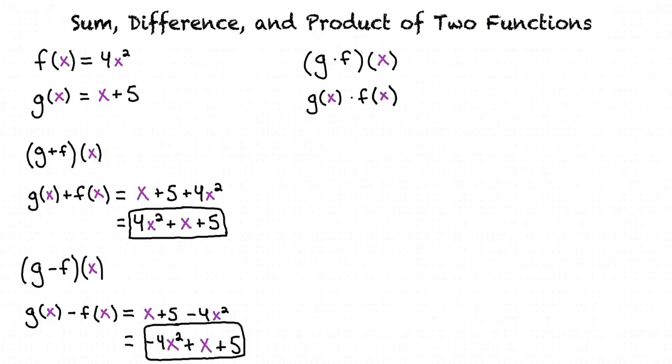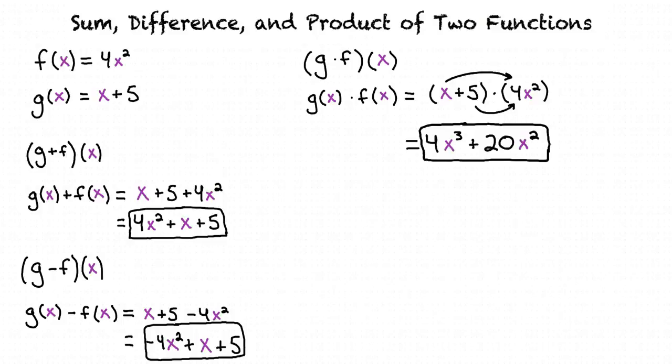We then multiply the functions together, leaving an x once again. Using the distributive property, we get 4x cubed plus 20x squared.